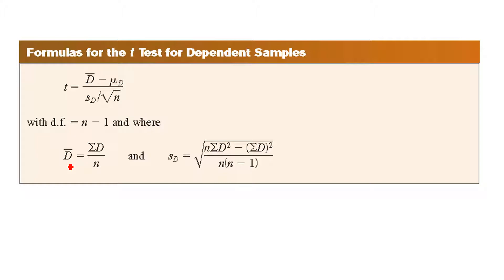D-bar is the sum of d over n. And s sub d is equal to the square root of: n times the summation of d-squared, minus the sum of the differences squared, all over n times the quantity n minus 1.